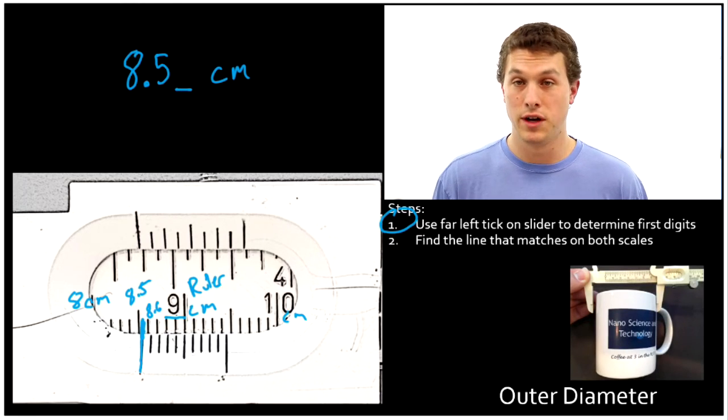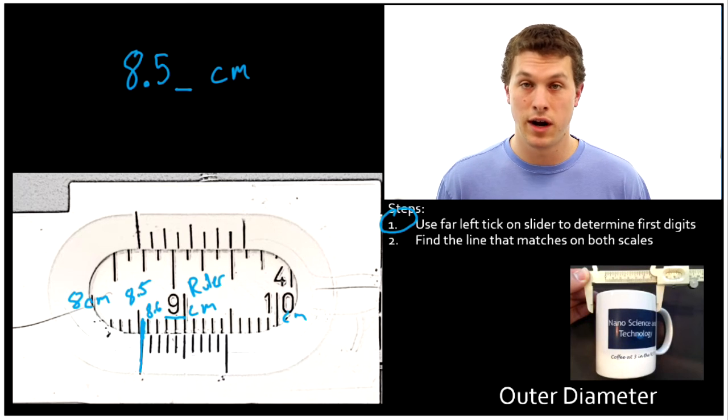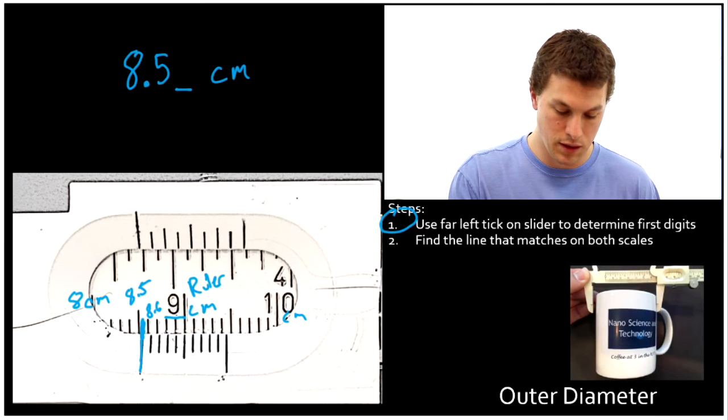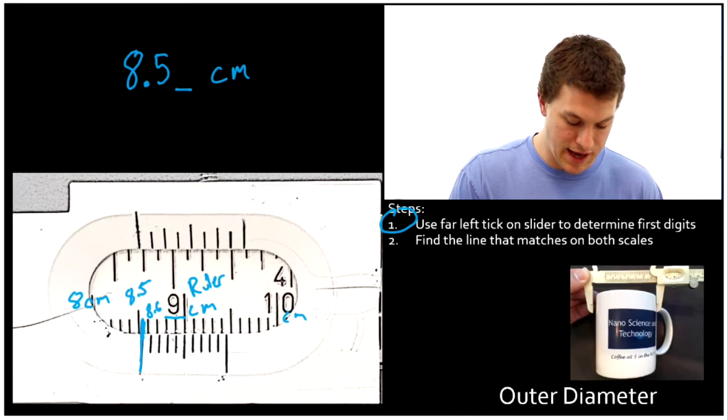The first two digits are pretty straightforward. It's basically like using a ruler. You just see where that left tick lines up, and that tells you the first two digits. But how are we going to get the next digit? That's where the vernier scale really comes into play.